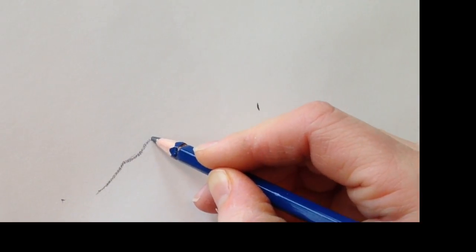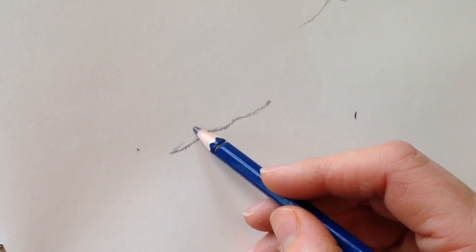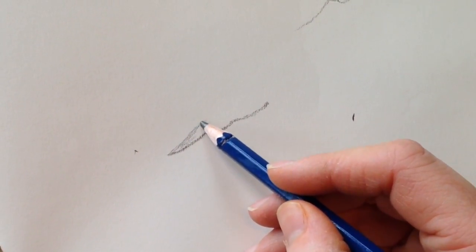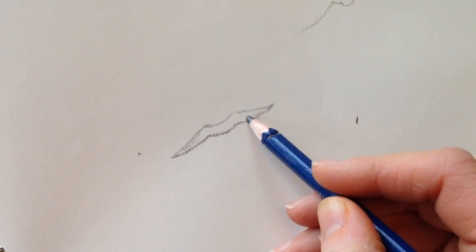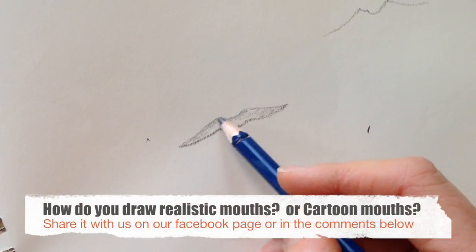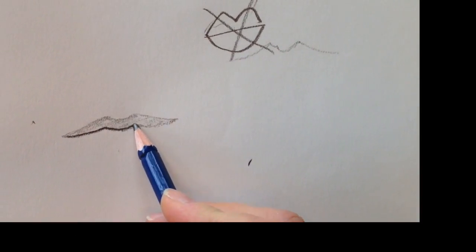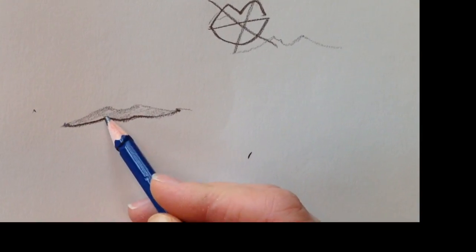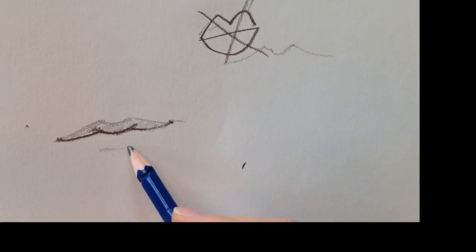And this is going to be different depending on who you're looking at. Then you want to lightly define where the lips are, and this is if the light is coming from the top.